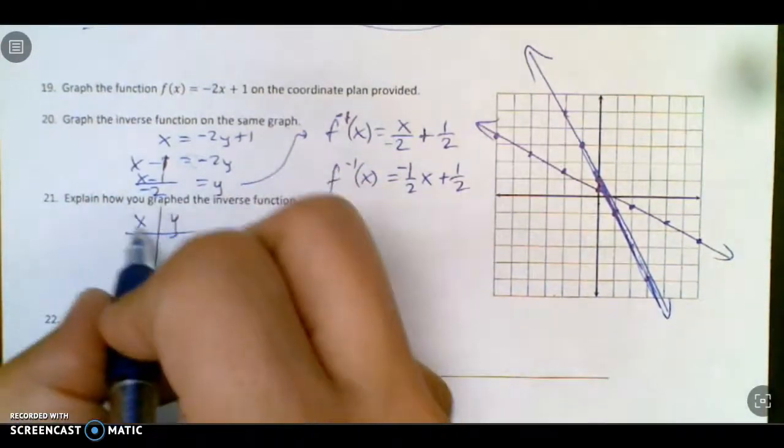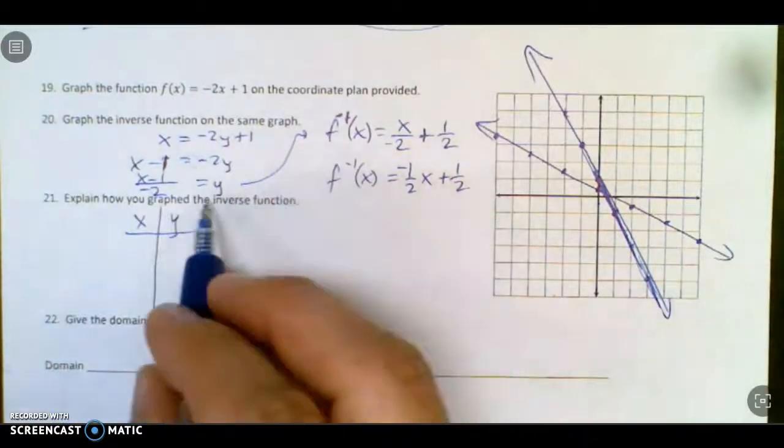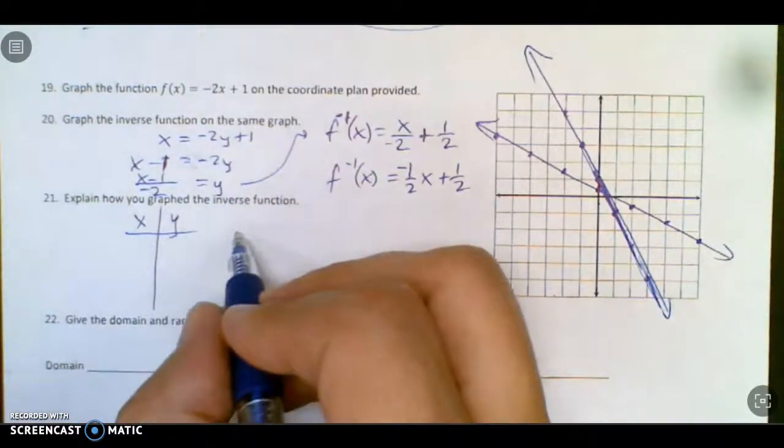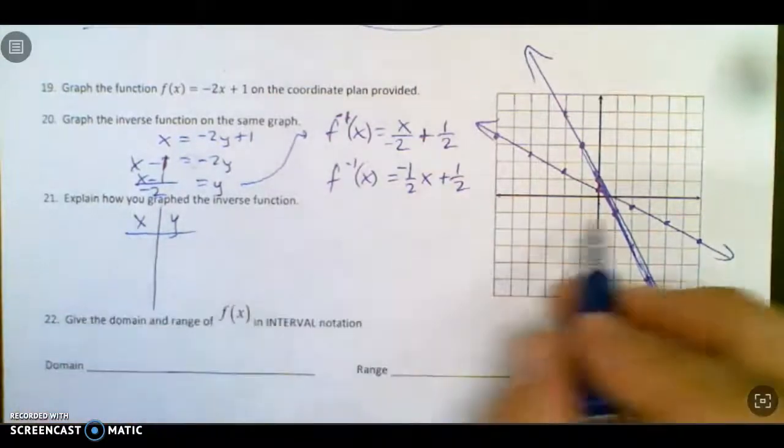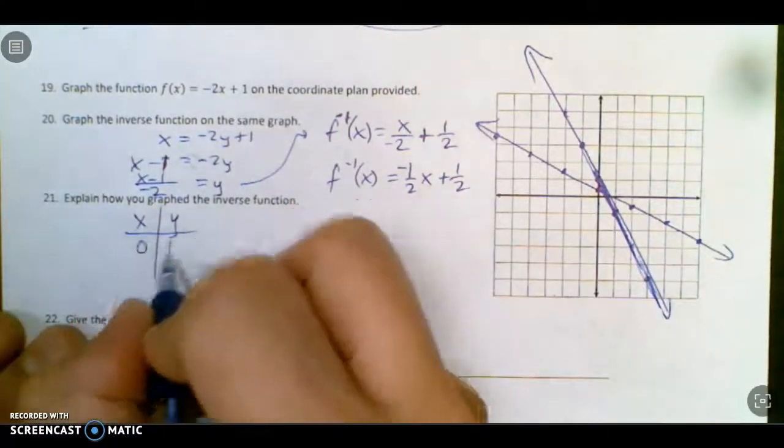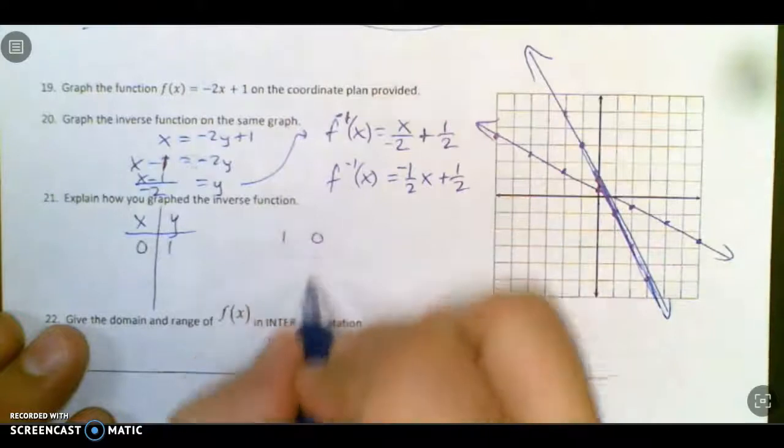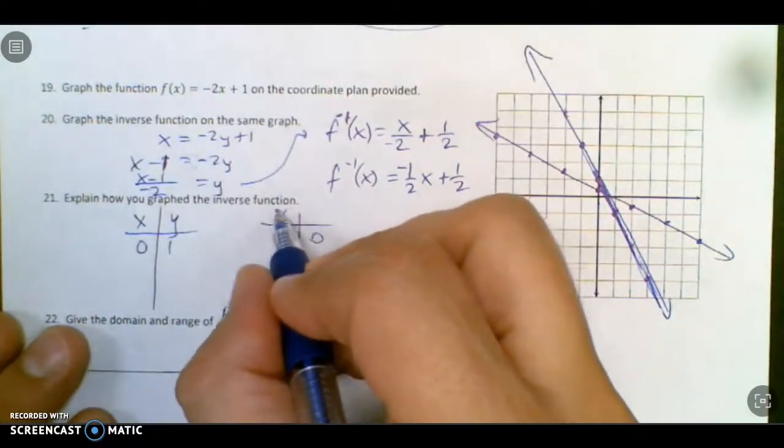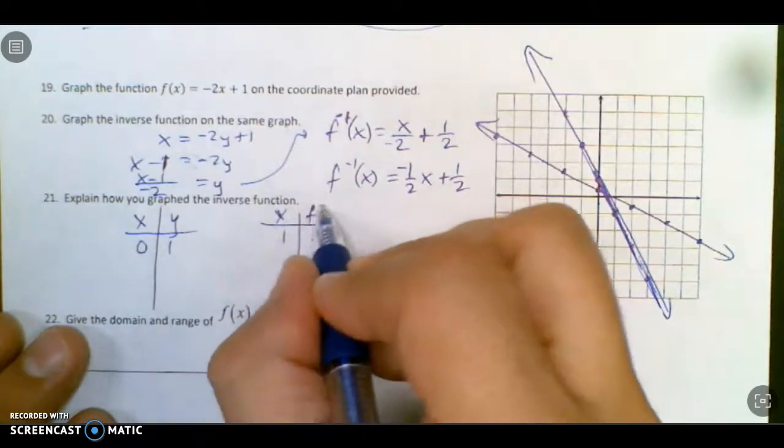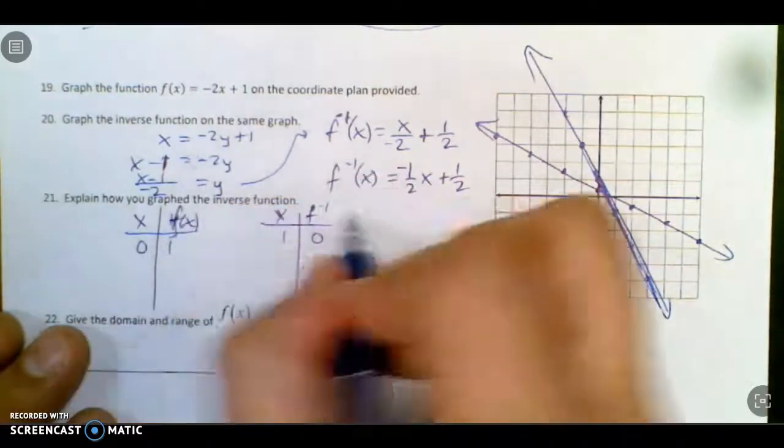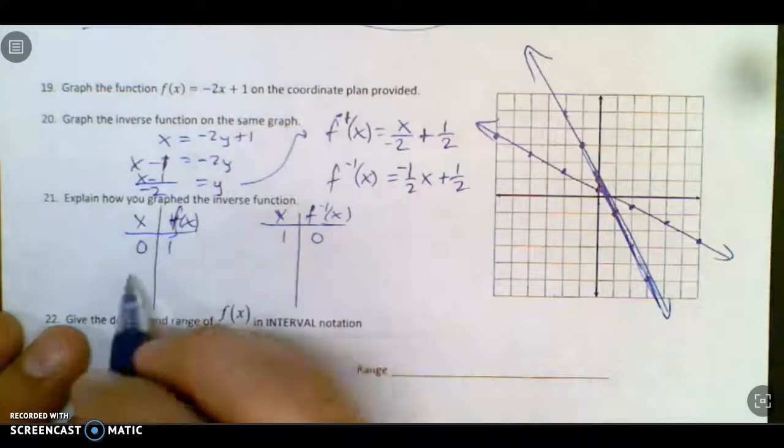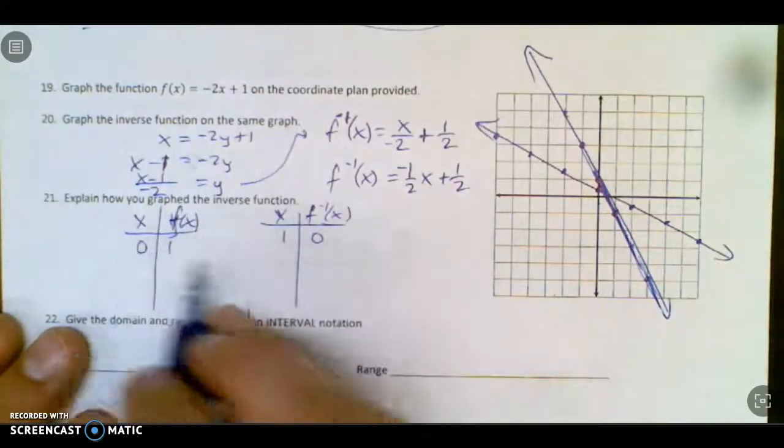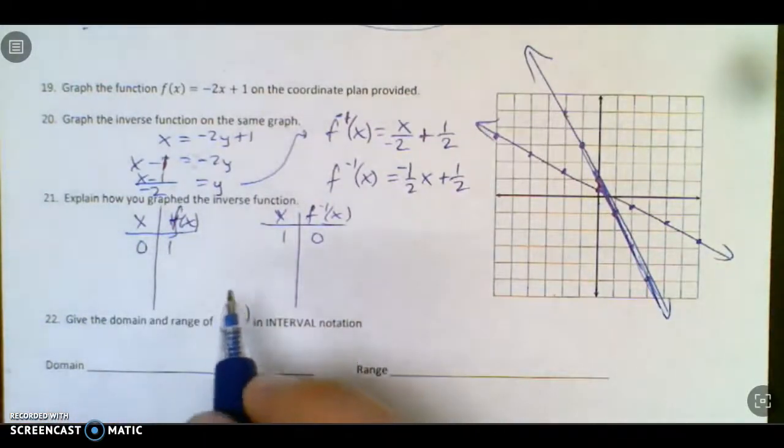That could have been for the original. I could have just churned out a few points that way. Like the point, you know, 0, 1 would become 1, 0 on the other guy. And that would have been easier. Why am I being crazy? Oh, that's how I should have graphed it. Just switch the x and y points. Would have been a lot nicer.